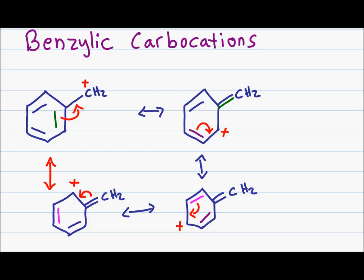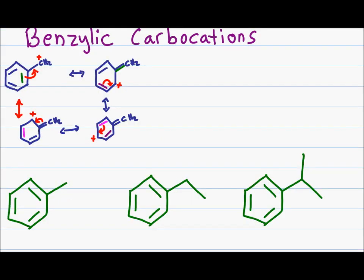Even though this is a primary carbocation, having a benzene ring right next to this carbon allows additional resonance that would otherwise not be possible, making this even more stable than a tertiary standard carbocation or even a secondary allylic carbocation. Even among benzylic carbocations there are differences: tertiary benzylic is more stable than secondary benzylic, which is more stable than primary benzylic, but primary benzylic is more stable than allylic and standard carbocations because of benzene resonance. Secondary and tertiary benzylic carbocations have benzene resonance along with hyperconjugation, making them the most stable carbocations overall.